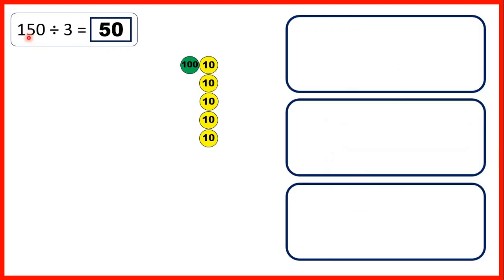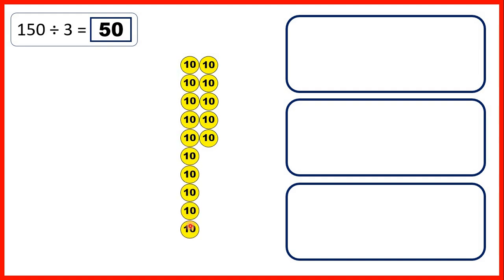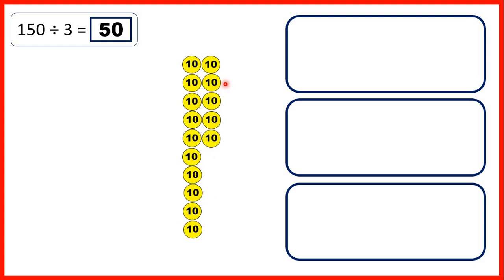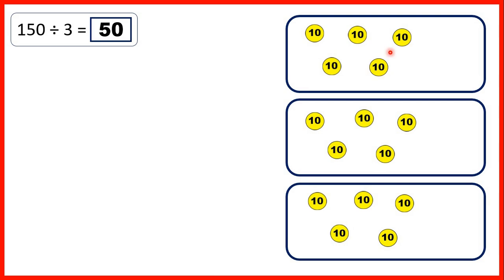Then we had 150 divided by 3. With 150, we have 1 hundred and 5 tens. But we can't share out the 100, because when we divide we need to make equal groups. What we can do is exchange our 100 counter for 10 tens, because 10 tens has the same value as 100. So now we have 15 tens, and we can share those out to give us 5 tens in each group. And 5 tens is the same as 50, so that's our answer.